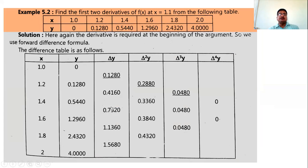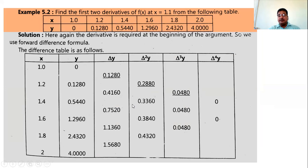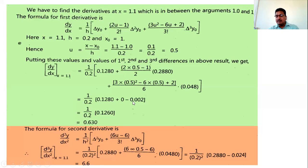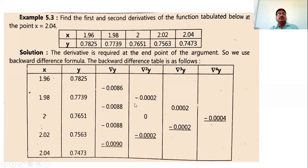Prepare the backward difference table. The difference between backward and forward difference tables is that in place of Δ (delta) we use ∇ (del). So we prepare the backward difference table here since the value is at the end of the table.